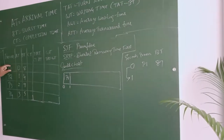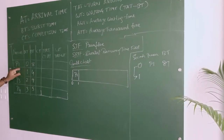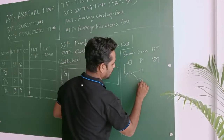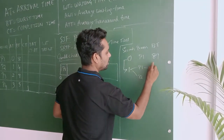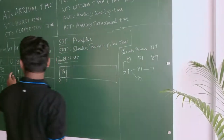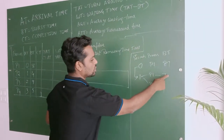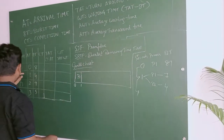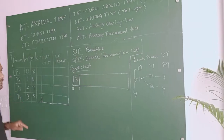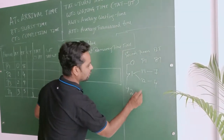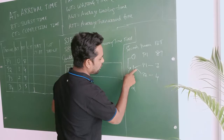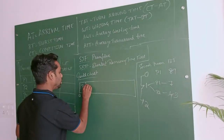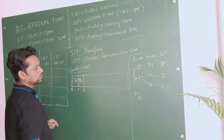At 1 second, P1 and P2 can execute. P1 remaining burst time is 7, and P2 burst time is 4. Between these two, P2 has the shortest time. Next process arrival time is 2 seconds, so execute until 2 seconds. P2 executes for 1 second, remaining becomes 3. P2 can execute for another 1 second to make it 2 seconds.